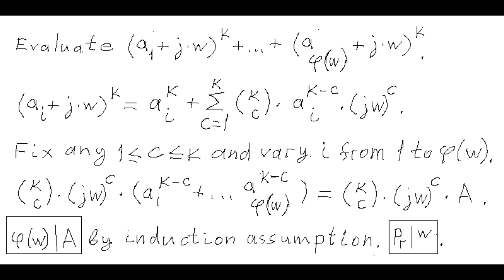The resulting sum of powers to the k of all totatives of v is divisible by phi of v. Notice one special case: when we count the term jw^k for each totative of w, the number of these terms is phi of w, so their sum is also divisible by phi of w times p_r.